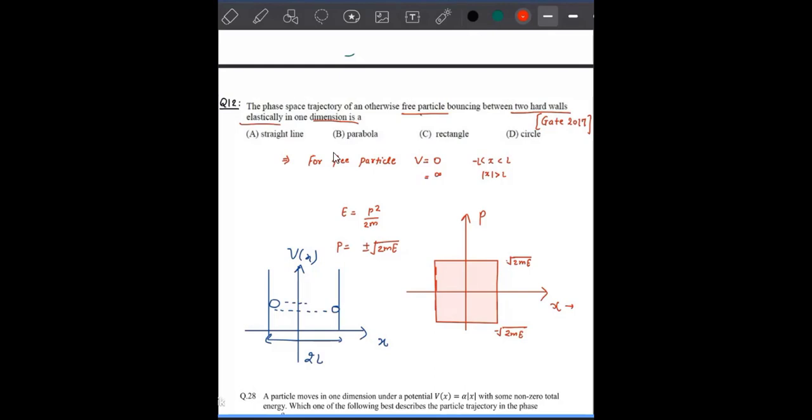We're given three particles bouncing elastically between two hard walls. This kind of example you have seen in quantum mechanics - if you have a particle in an infinite potential well, the particle motion is elastic and it bounces between these two walls.